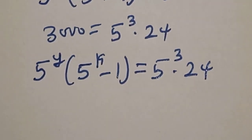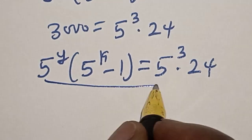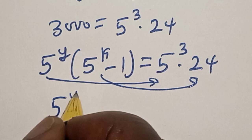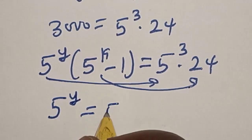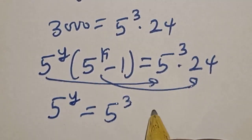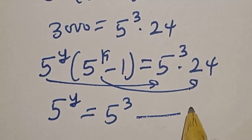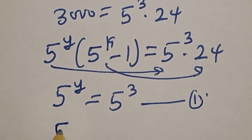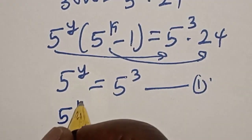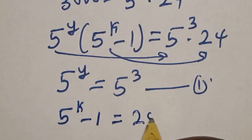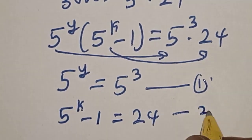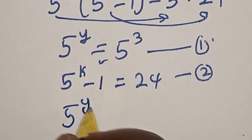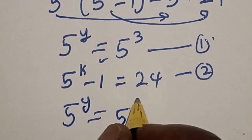By comparing both sides, we match corresponding parts. Equation 1: 5 raised to power y equals 5 raised to power 3. Equation 2: 5 raised to power k minus 1 equals 24.